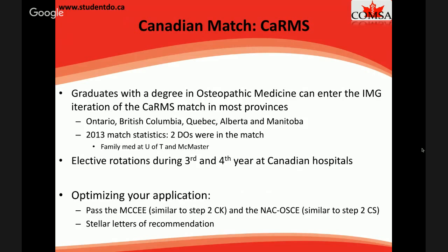In your third and fourth year — most likely fourth year — you have the option of scheduling elective rotations in Canada, which works on a lottery-based system and is competitive to get. If you can get a Canadian rotation, it's a good opportunity to get a letter of recommendation from a Canadian physician, making your CARMS application stronger. However, given the low match rates, it may be better to maximize your options in the US instead. To optimize your CARMS application, you must pass the MCCEE and NACOSCE, and have very strong letters of recommendation from physicians you rotated with.